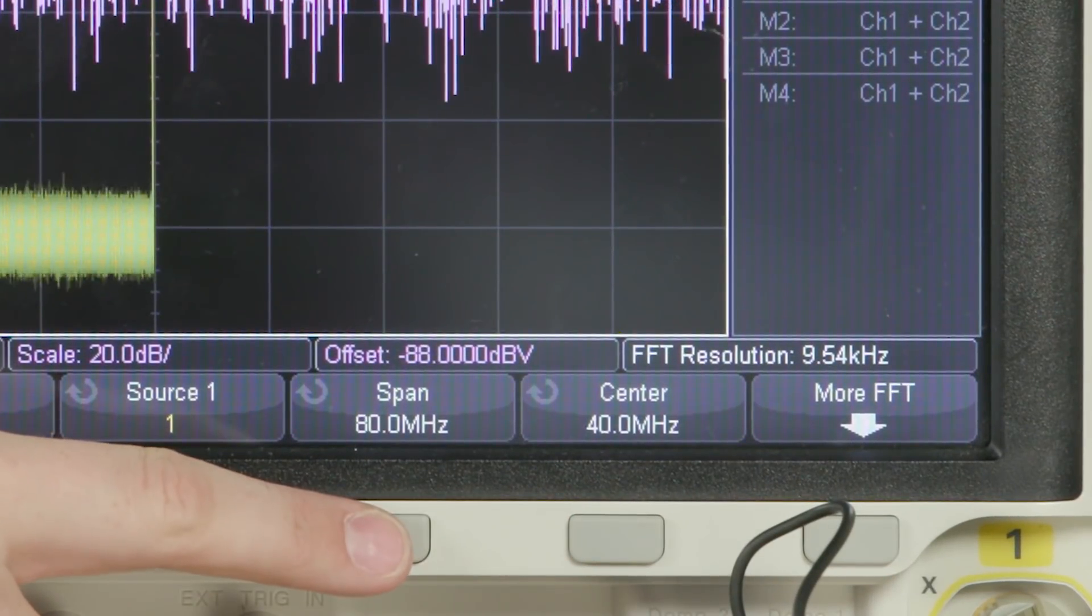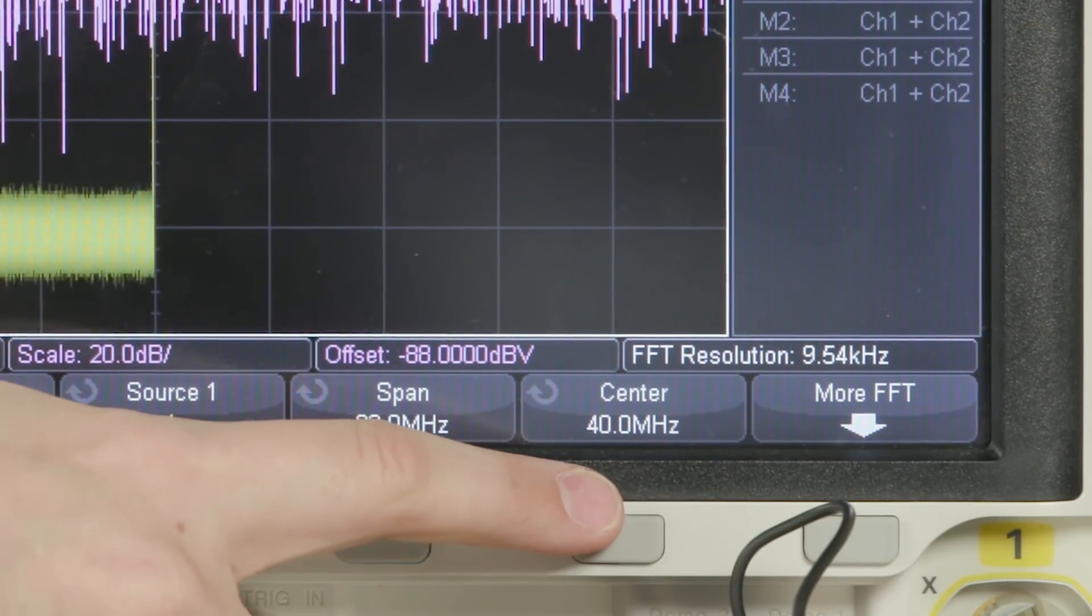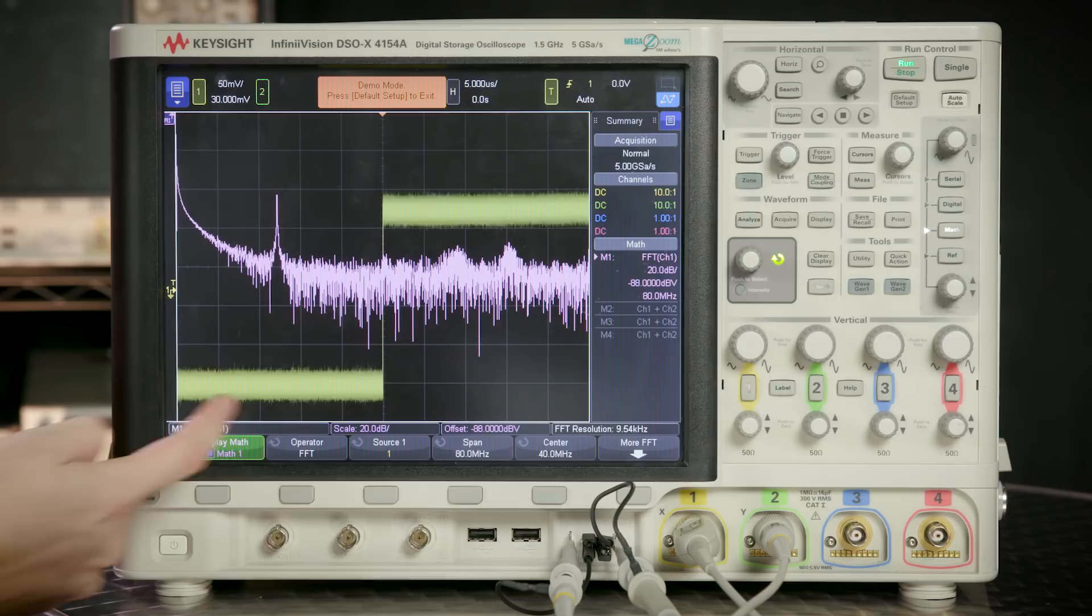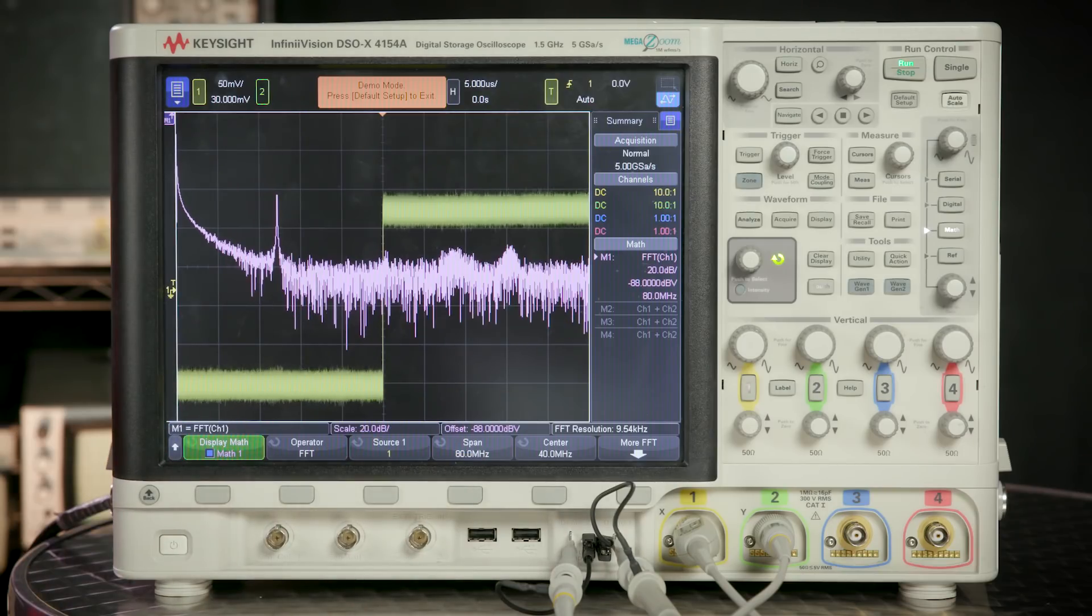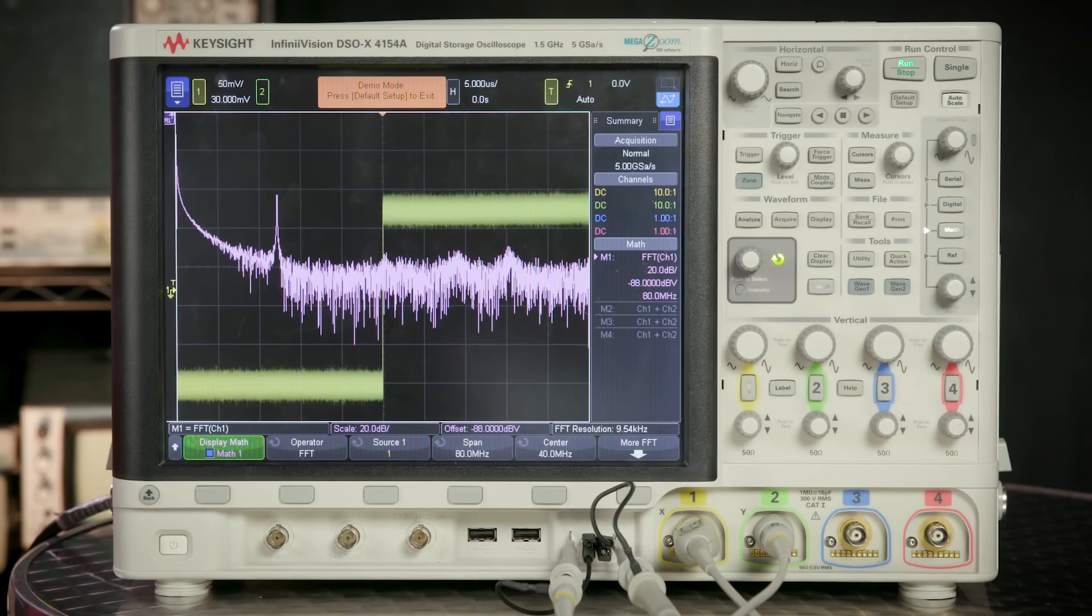The span setting is the FFT frequency width, and the center setting is the frequency in the middle of the span. So a one kilohertz span with a 10 kilohertz center frequency will show you the spectra from 9 kilohertz to 11 kilohertz.